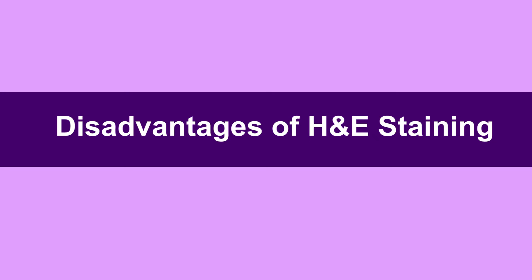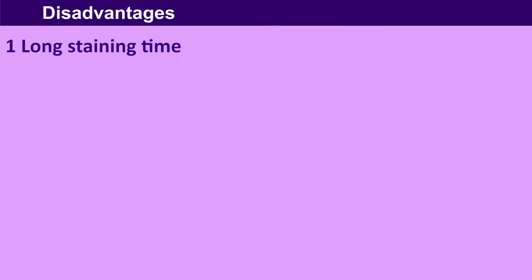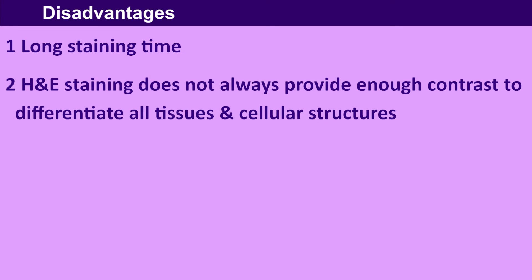Disadvantages of hematoxylin and eosin staining: it has a long staining time, and H&E staining does not always provide enough contrast to differentiate all tissues and cellular structures.